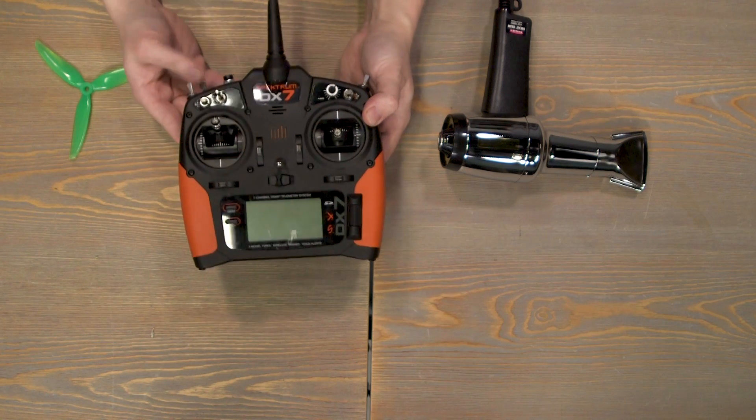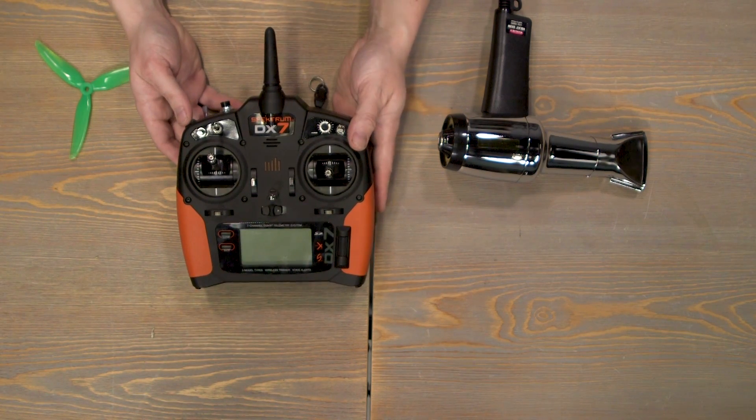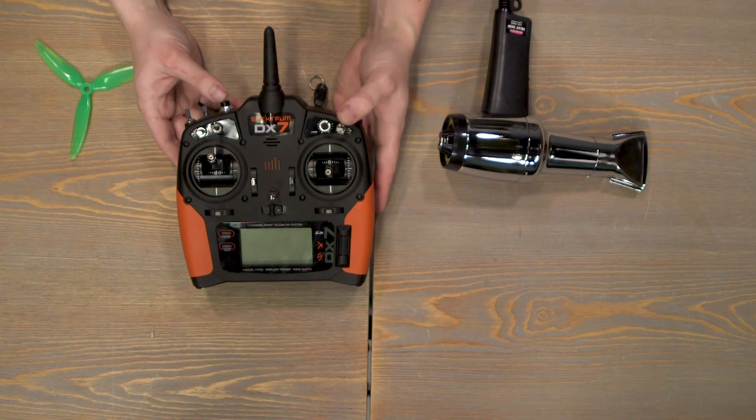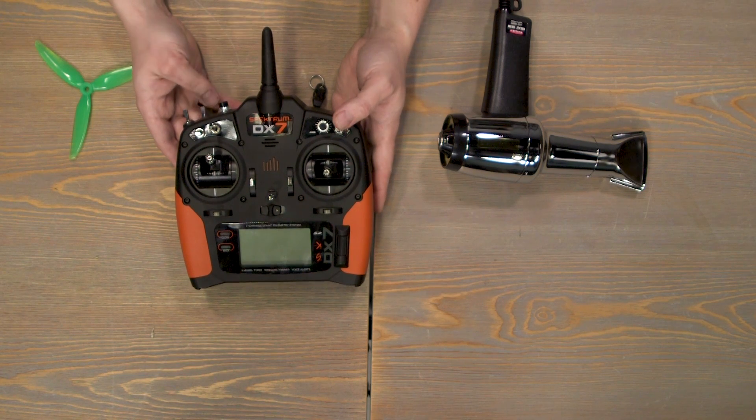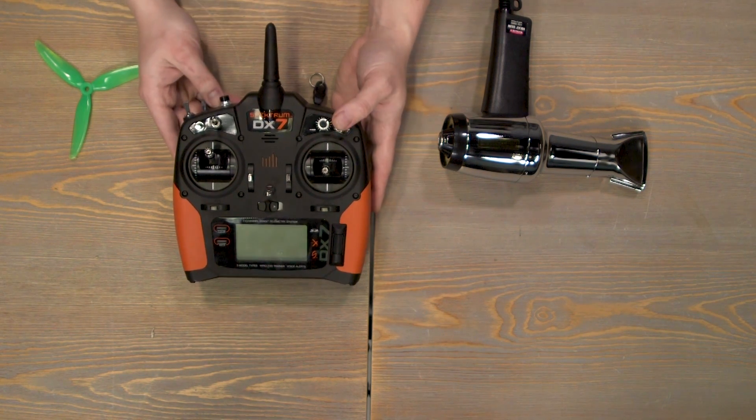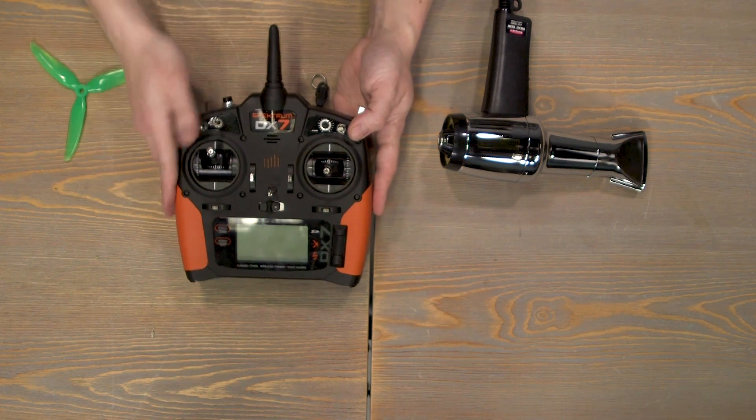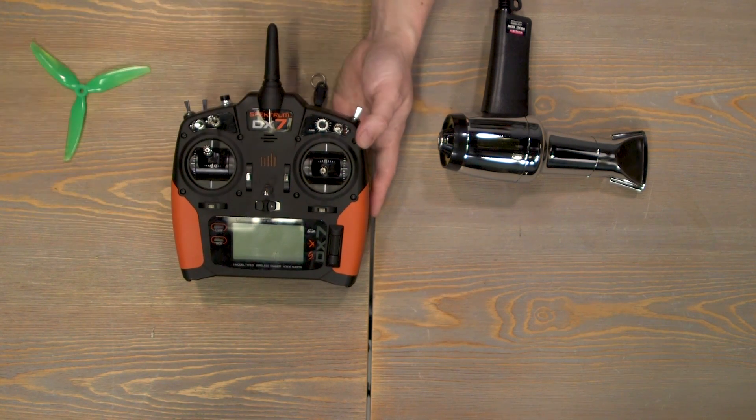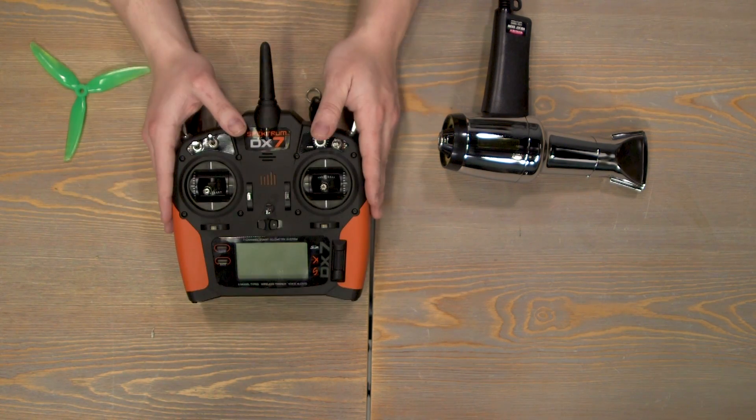This is for the DX radios like the DX7 that we have here, the DX6 and the DX9, as well as the iX12. And the iX20 actually comes with its own orange grip. So if you guys want to follow along in this video to help you replace those, you can. I hope you guys liked this video.